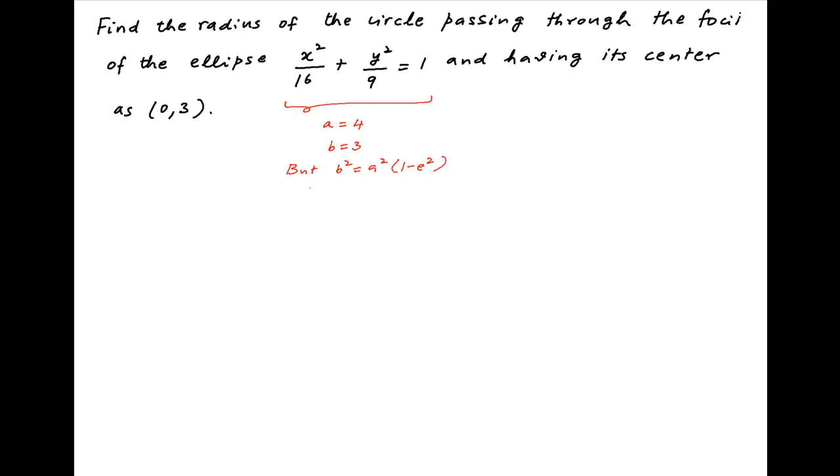The eccentricity e of the ellipse is given by the equation b² = a²(1 - e²), and therefore e² = 1 - b²/a² which is equal to 1 - 9/16, which is equal to 7/16. Therefore e is equal to √7/4.